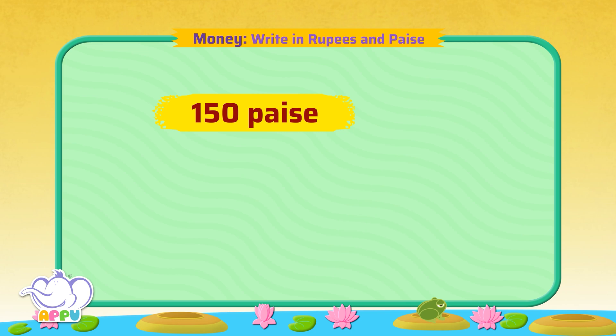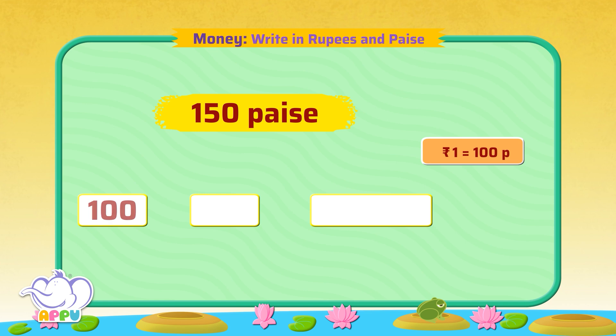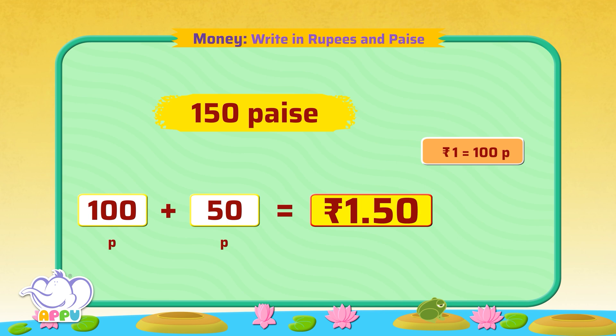We know 1 rupee equals 100 paise. So 150 paise can be written as 100 paise and 50 paise. Now 100 paise can be written as 1 rupee, and 50 paise as 50 paise. So the answer is 1 rupee and 50 paise.